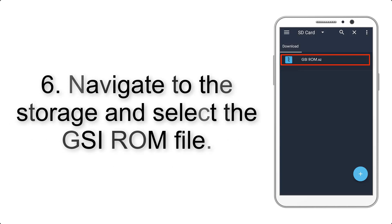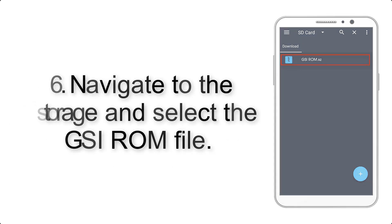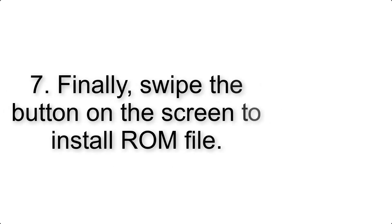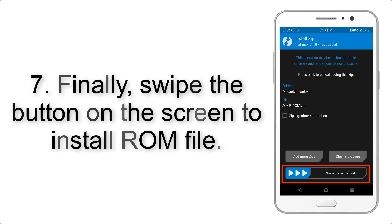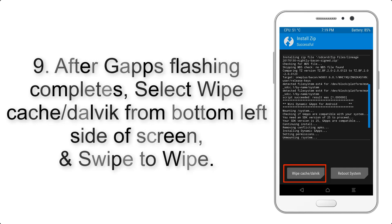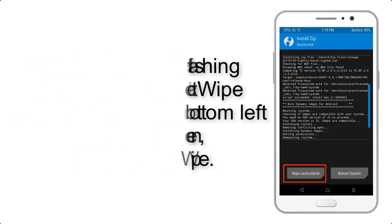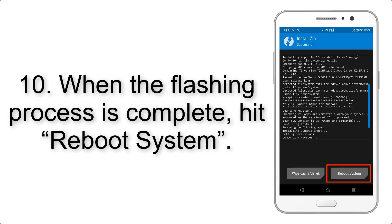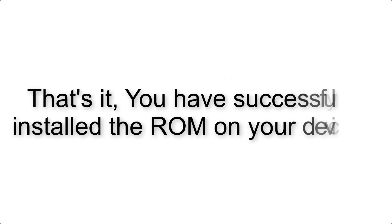Step 6: Navigate to the storage and select the GSI ROM file. Step 7: Swipe the button on the screen to install the ROM file. Step 9: After gapps flashing completes, select Wipe Cache and Dalvik from the bottom left side of the screen and swipe to wipe. Step 10: When the flashing process is complete, hit Reboot System.